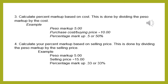Step number four: if you calculate your percentage markup based on selling price, this is done by dividing the peso markup by the selling price. For example, your peso markup or tubo is 5 pesos and your selling price is 15 pesos, so you divide 5 by 15. Your percentage markup will be 0.33 or 33 percent.